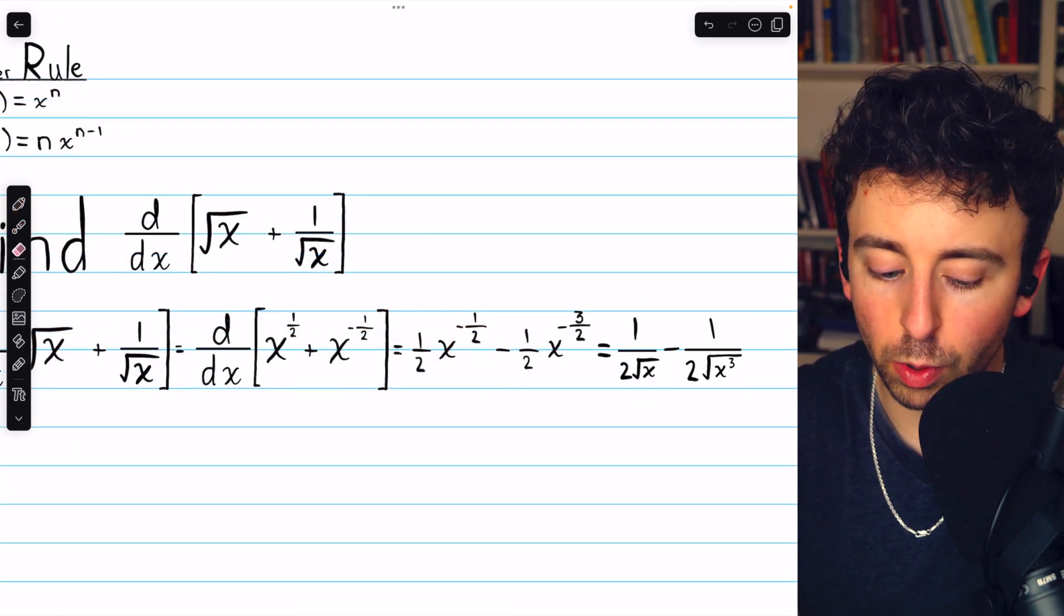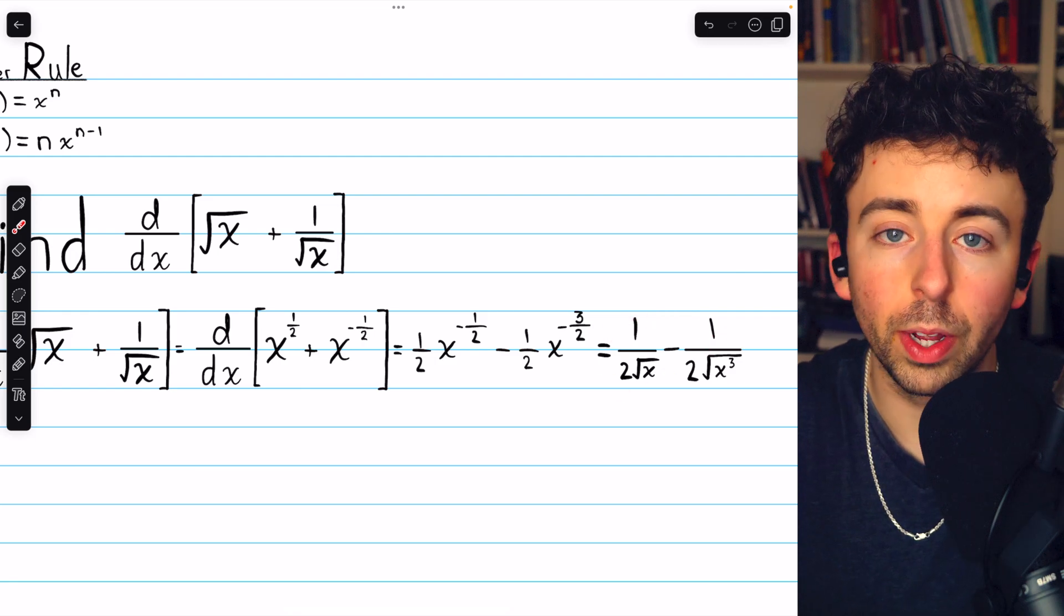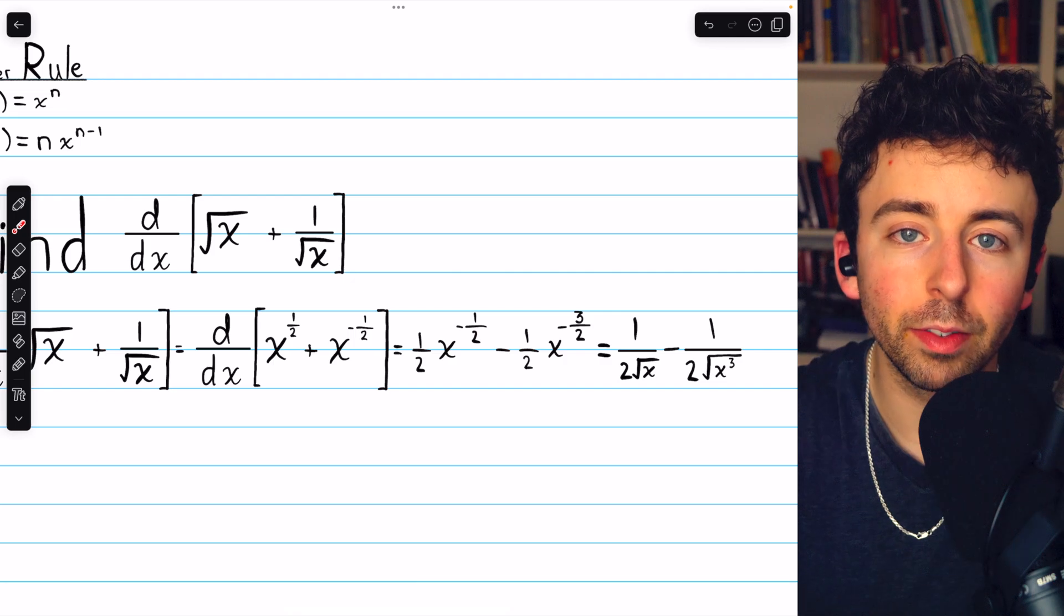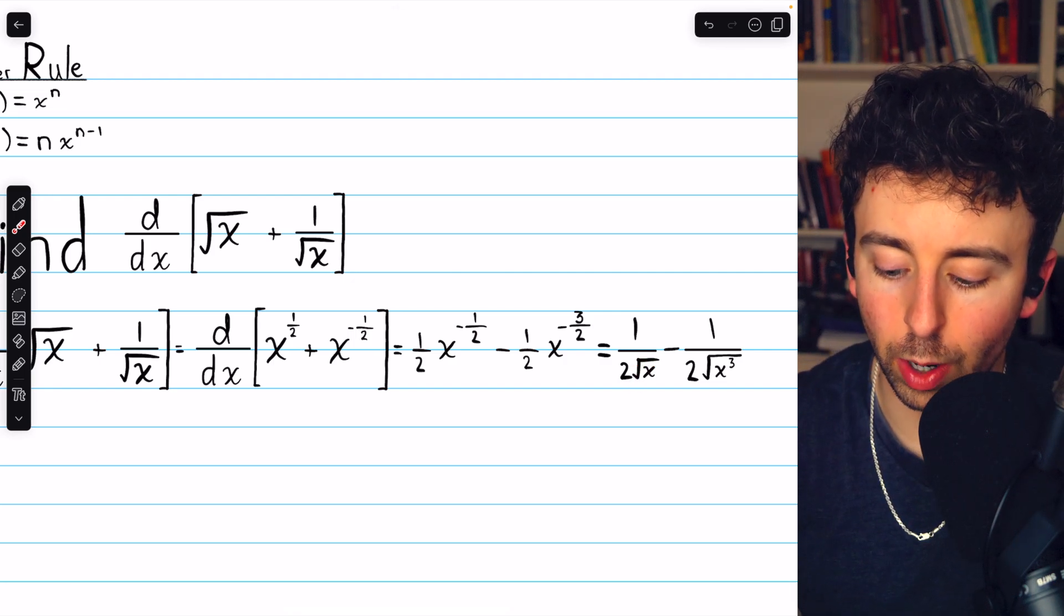We could leave it like that, or you could rewrite it like this if you want to avoid the negative exponents. Move this x to the denominator, and its power becomes positive. And a power of 1 half is, of course, the same as the square root.